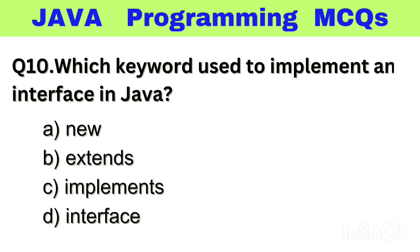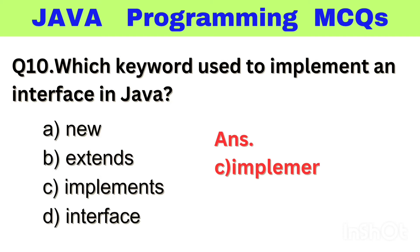Question number 10. Which keyword is used to implement an interface in Java? Option A: New, B: Extends, C: Implements, D: Interface. The right answer is option C, Implements.